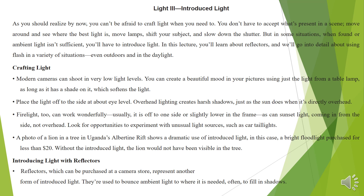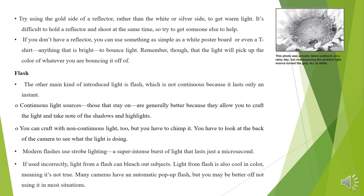Introducing light with reflectors. Reflectors, which can be purchased at a camera store, represent another form of introduced light. They are used to bounce ambient light to where it is needed, often to fill in shadows. Try using the gold side of a reflector rather than the white or silver side to get warm light. It's difficult to hold the reflector and shoot at the same time, so try to get someone else to help. If you don't have a reflector, you can use something as simple as white poster board or even a t-shirt — anything that is bright to bounce the light back. Remember though that the light will pick up the color of whatever you are bouncing it off.